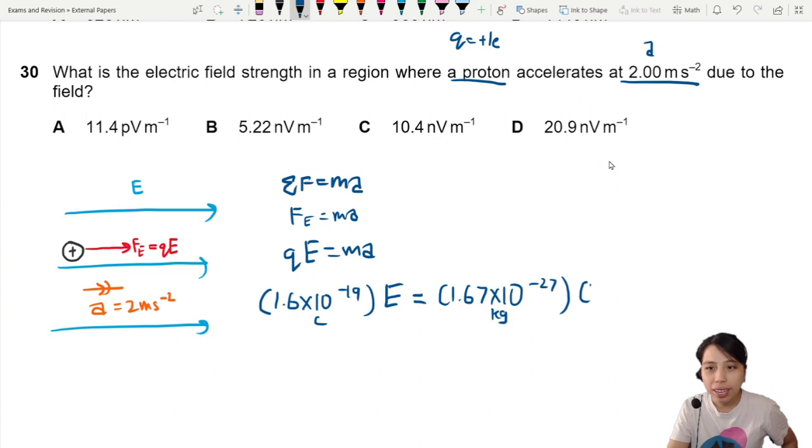And acceleration, lastly 2.00. That's it. What do we get for our E?